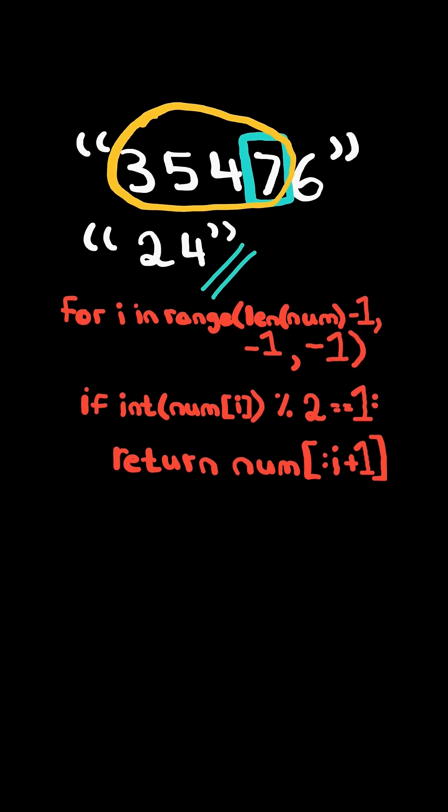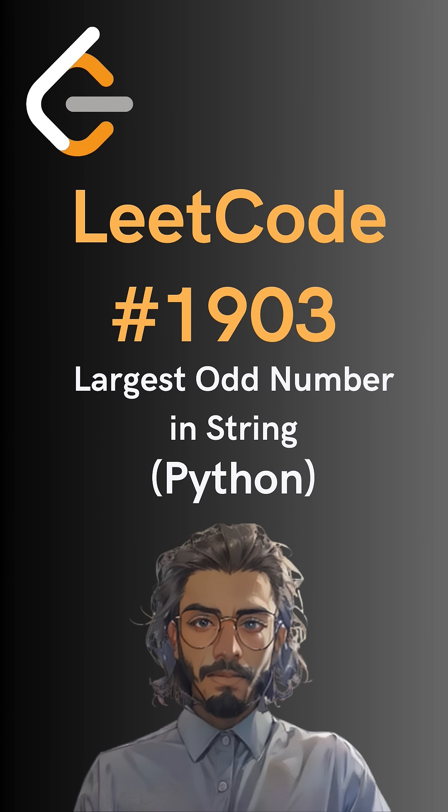Consider we had this example where there are no odd integers. In this case, at the very end, we would return the empty string. And here is the code to do so. Please like and follow for more.